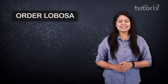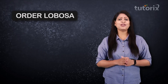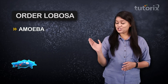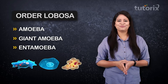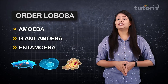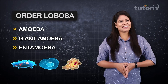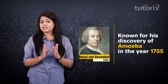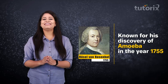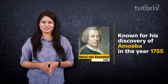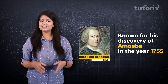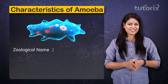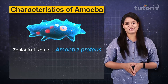Order Lobosa has three important members: Amoeba, giant amoeba, and Entamoeba. We will first talk about the most common example — Amoeba. Amoeba was discovered by Rössel von Rosenhof in the year 1755. The zoological name of amoeba is Amoeba proteus.